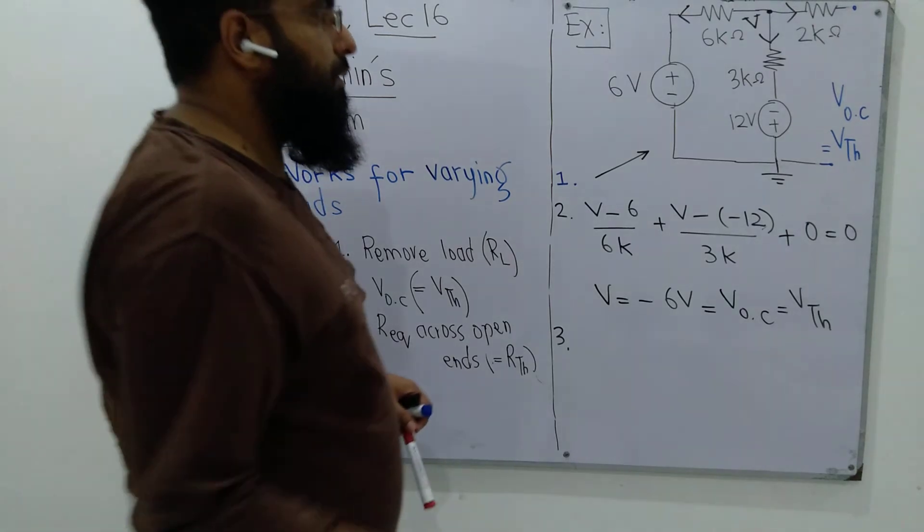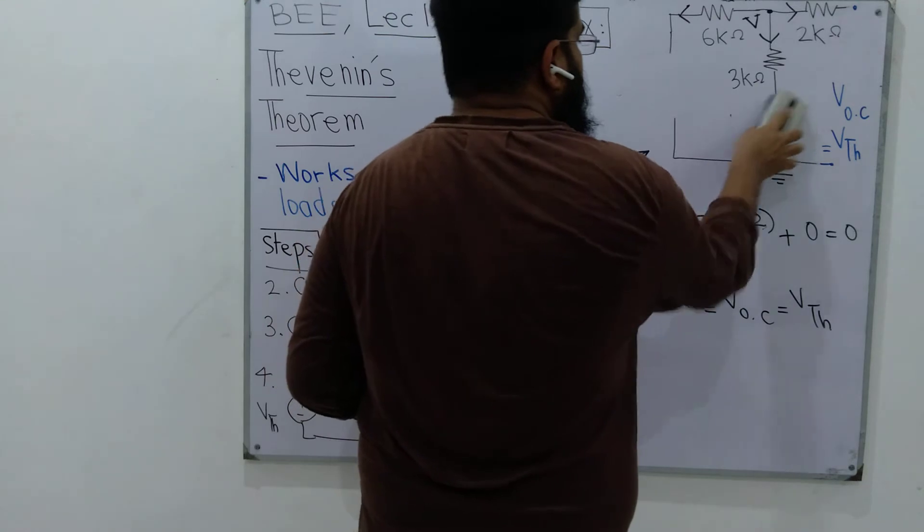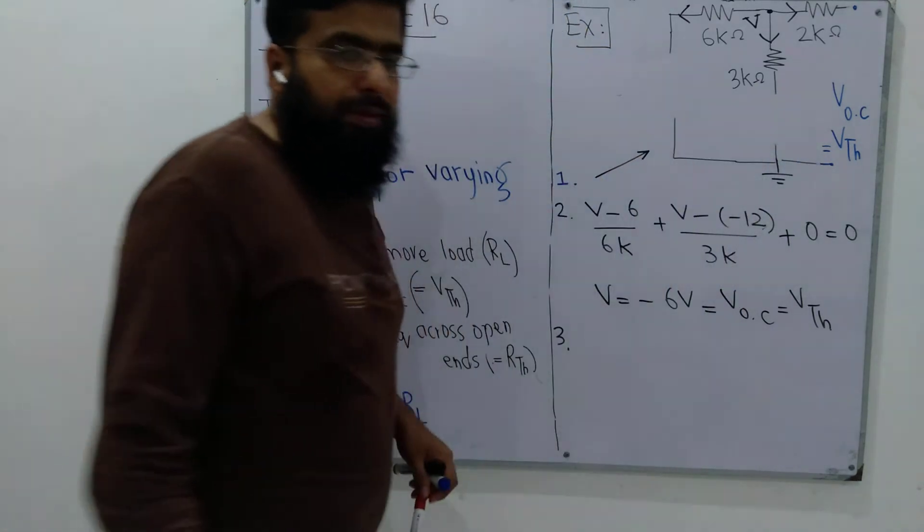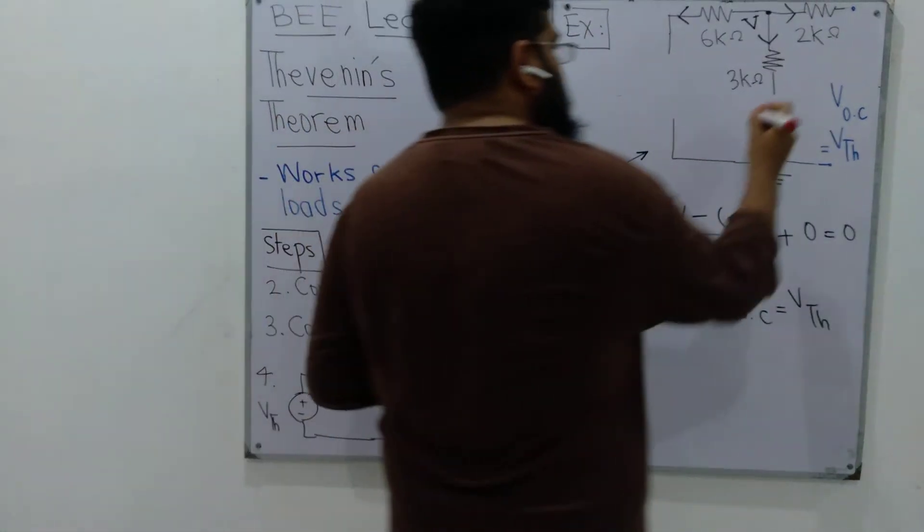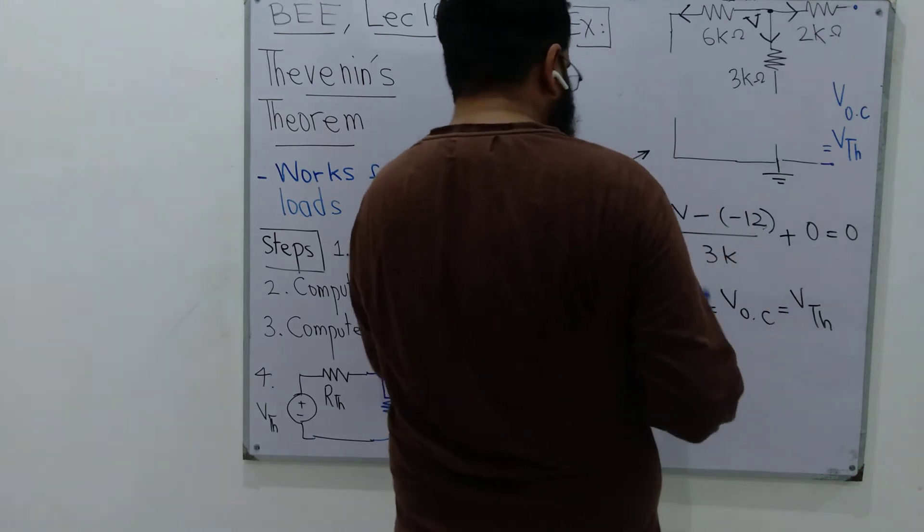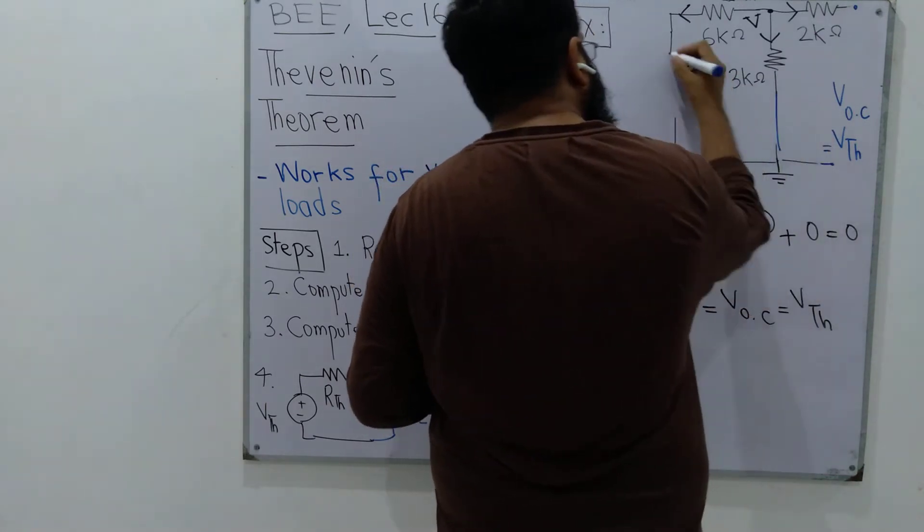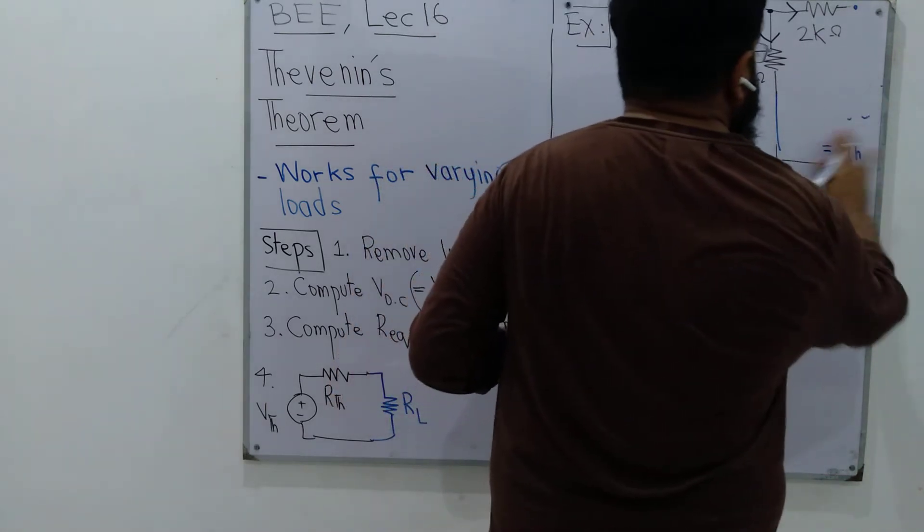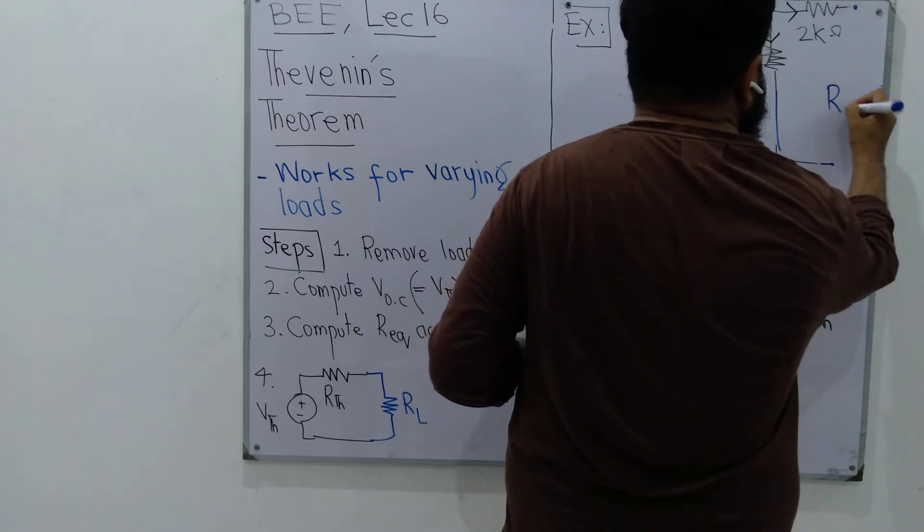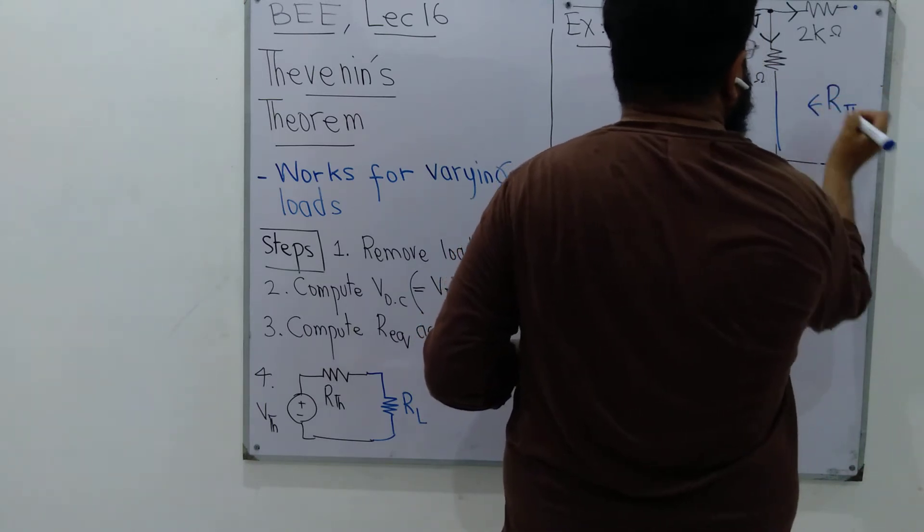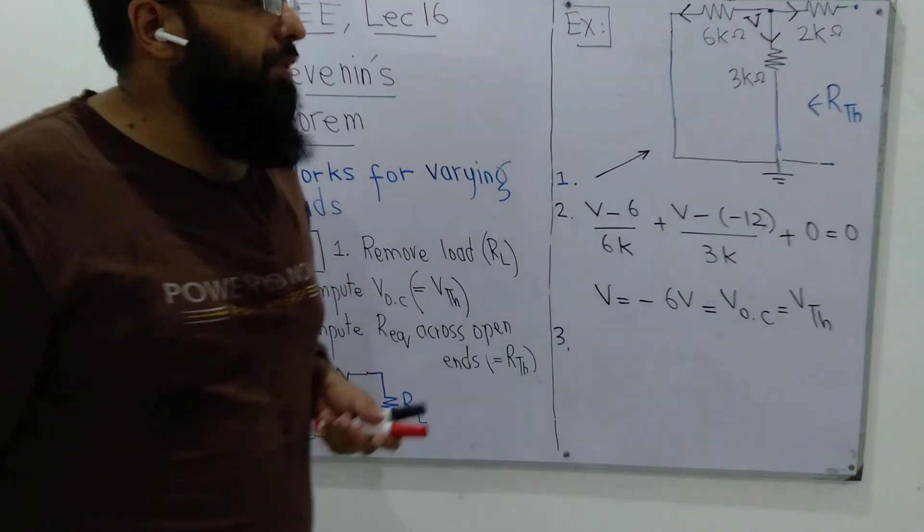We have two voltage sources here and they both will be replaced by short circuits. So we have a short circuit here and a short circuit here. Across the output ends we will compute the resistance we call Rthevenin.